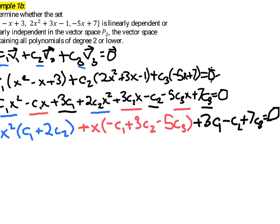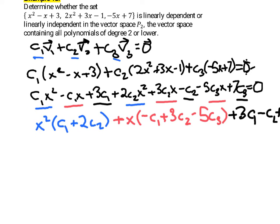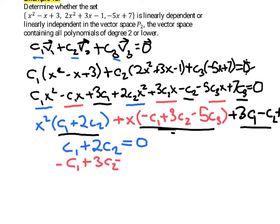For that to be equal to 0, the coefficient of x squared would have to be 0, the coefficient of x would have to be 0, and the constant term would have to be 0. So that's going to give us three separate equations. We have c1 plus 2c2, the coefficient of x squared must be 0. Also the coefficient of x must be 0, so negative c1 plus 3c2 minus 5c3 must be 0. And lastly, the constant term must be 0, so 3c1 minus c2 plus 7c3 must be 0.